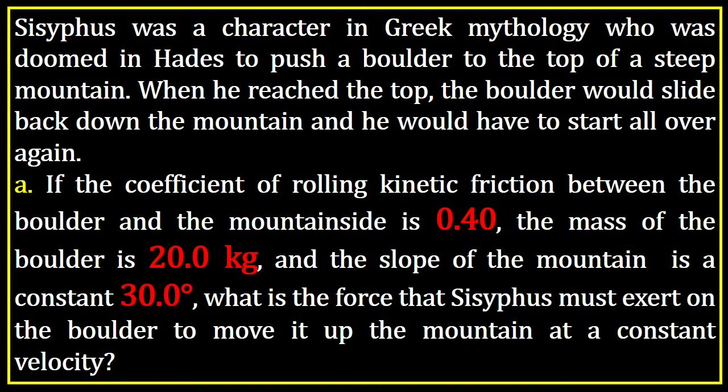The next. Sisyphus, a character in Greek mythology who was doomed to Hades to push a boulder to the top of a steep mountain. When he reached the top, the boulder would slide back down the mountain, and he would have to start all over again. If the coefficient of rolling kinetic friction between the boulder and the mountainside is 0.4, the mass of the boulder is 20 kilograms, and the slope of the mountain is at 30 degrees, what is the force that Sisyphus must exert on the boulder to move it up the mountain at a constant velocity?